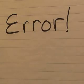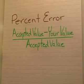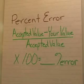What about error? Error is a measure of accuracy. How close to the accepted or the correct answer are you? How about percent error? How far off are you? If you take your accepted value, what's right, minus your value, divided by the accepted value, times 100, that's percent error.